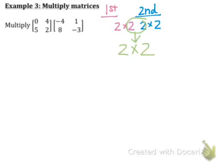Our new matrix when we multiply these two will be the size of a two by two. To multiply matrices, we go across the first row — zero, four — multiplied by the first column — negative four, eight. Then go across the first row again and down the second column. Then move to the bottom row — five, two — and down the first column — negative four, eight — then across five, two again and down the second column — one, negative three. You go across then down, across then down.